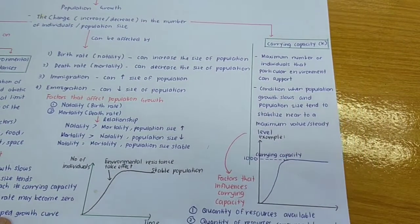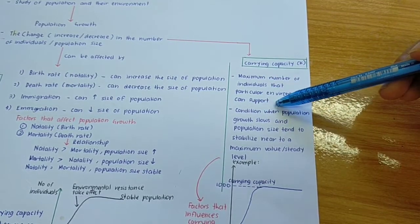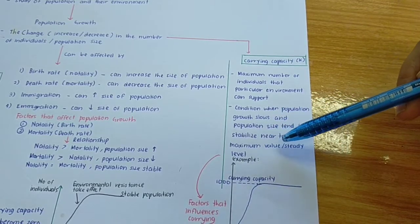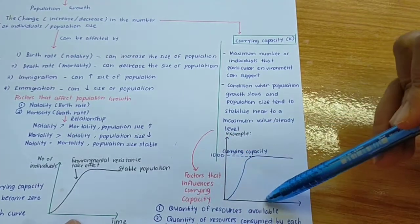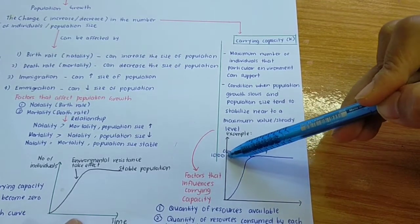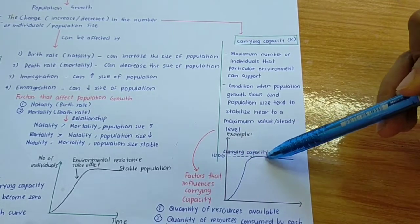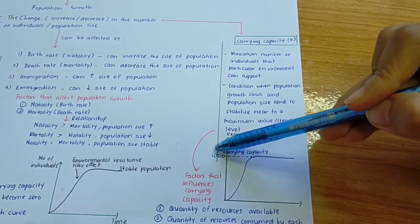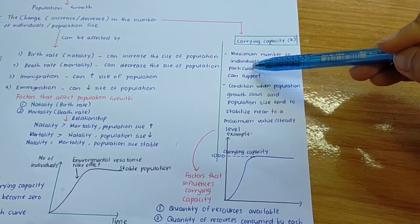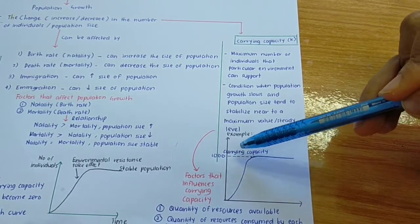Carrying capacity is the maximum number of individuals that a particular environment can support. It is the condition when population growth slows and population size tends to stabilize near a maximum or steady level. On a sigmoid growth curve, you will see a stable phase — that stable population is the carrying capacity. For example, if the question asks for the carrying capacity of a population, you find the stable region — in this case the answer would be 1000, meaning only 1000 individuals can be supported by this environment.